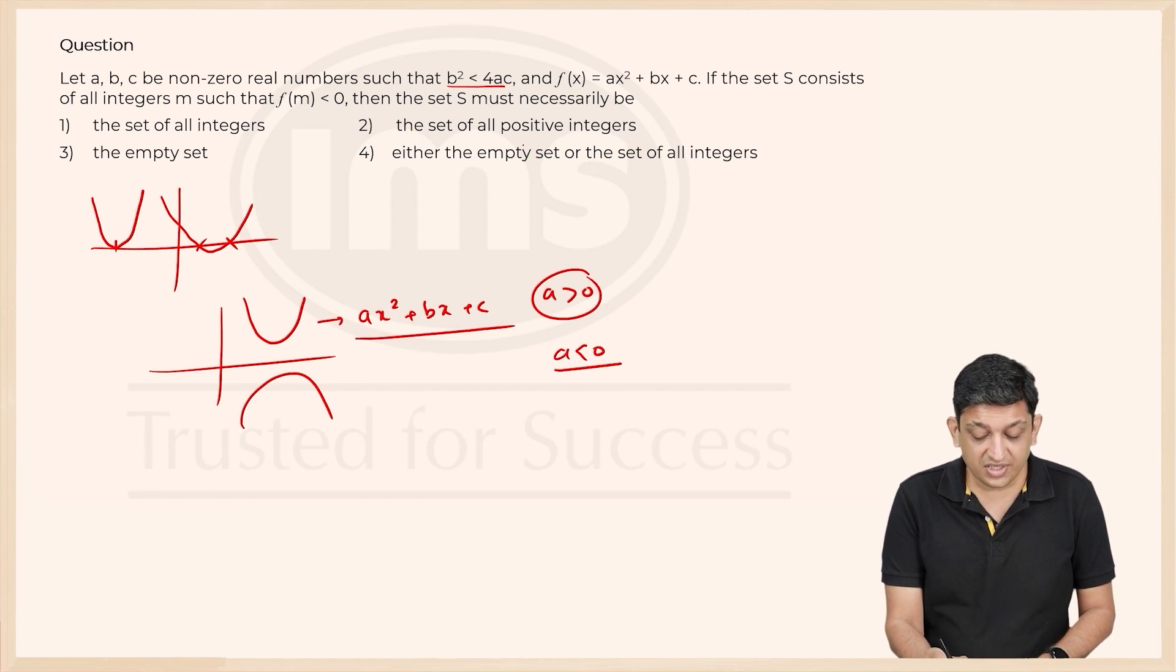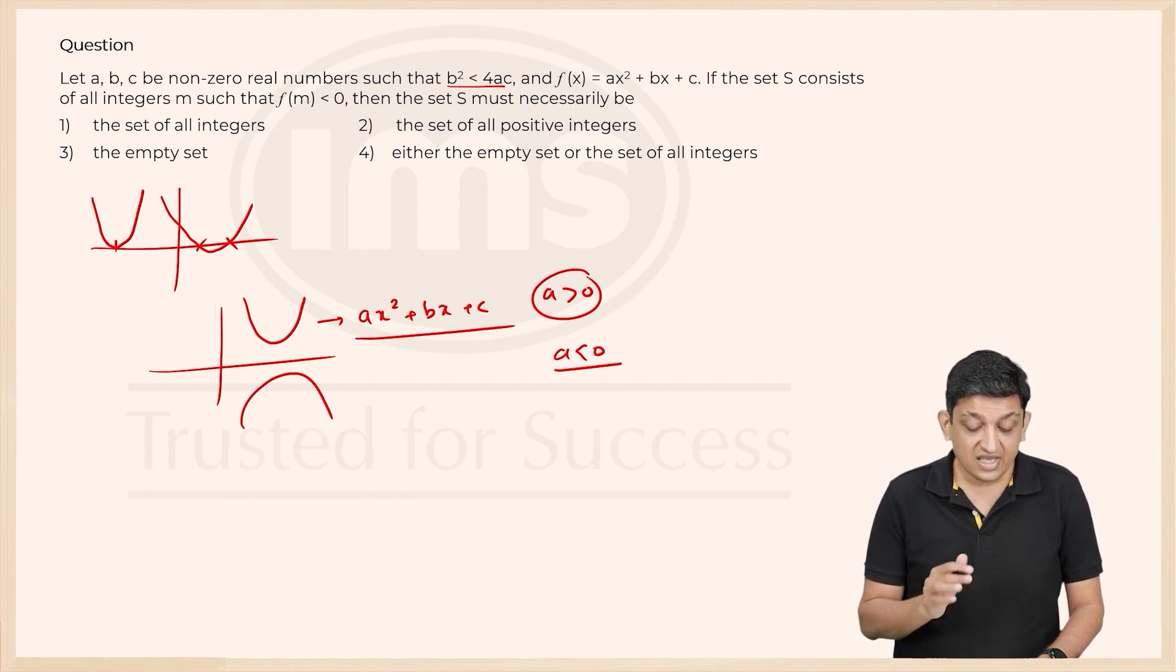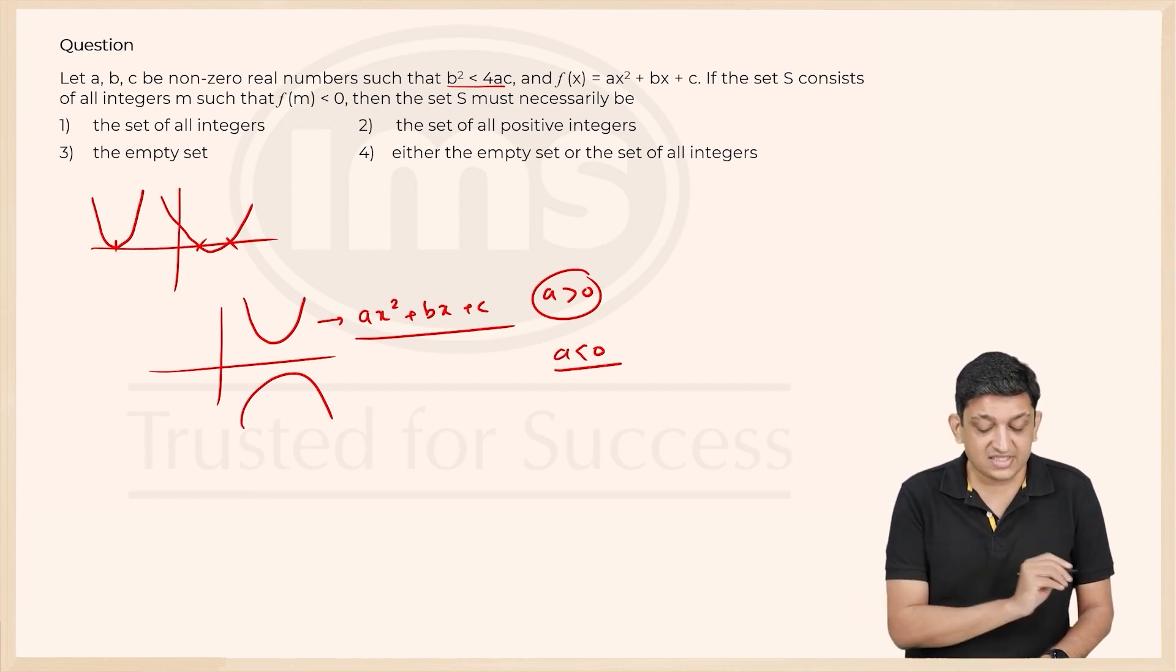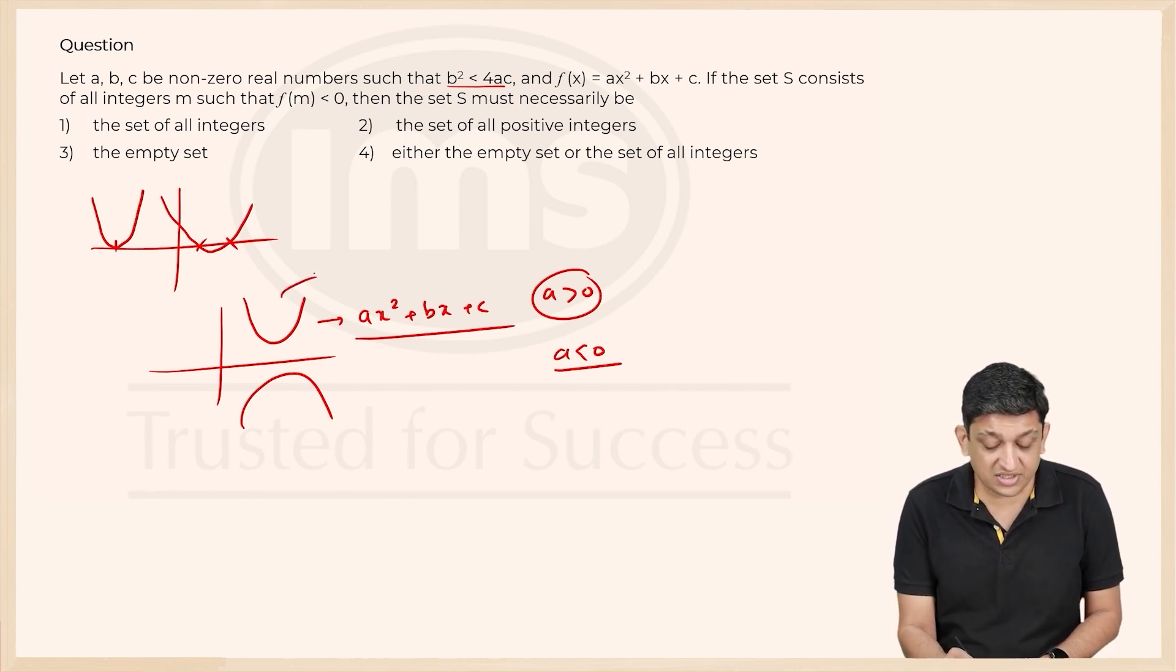So f(x) in this particular case, or f(m) in this particular case, gives us all imaginary roots. So for what all cases is f(m) going to be less than 0? f(m) is going to be less than 0 in this particular case for nothing.